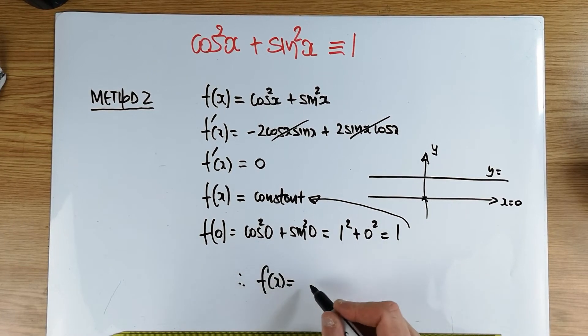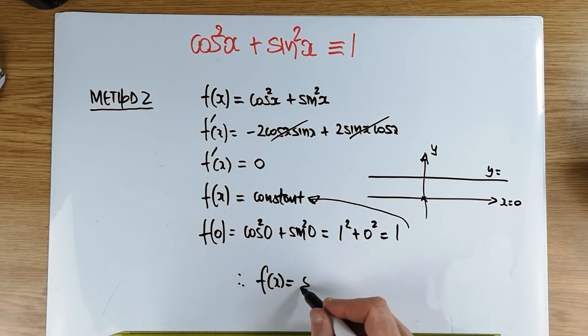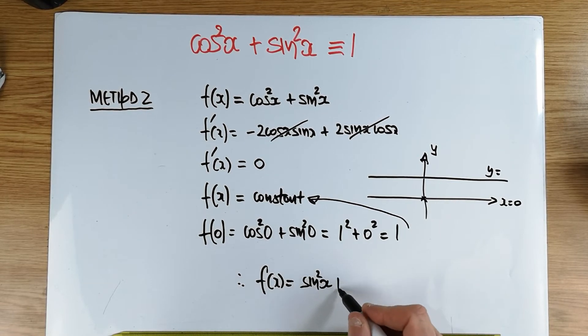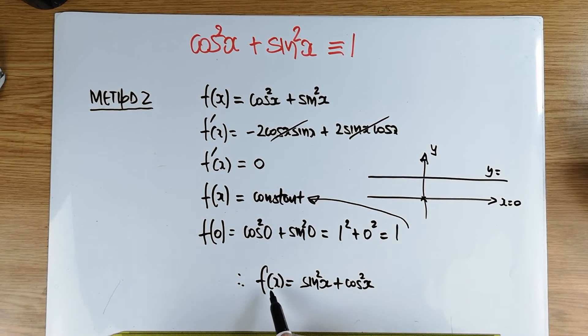And therefore, f of x is equal to sine squared. Actually, I have to write it the other way around. Sine squared plus cos, because I wrote it there in reverse order. f of x, which is equal to sine squared x plus cos squared x. We just found it, in fact, equal to the constant function, equal to one.